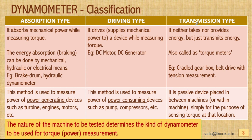Transmission type dynamometers neither take nor provide energy — they simply transmit energy from one device to another. These are also called torque meters. Examples include a cradle gearbox connected between two devices, or a belt drive with belt tension measurement. When power transmission happens there will be tension on one side and slack on the other, so the torque at that location can be identified. It is a passive device placed between machines simply for the purpose of sensing torque.